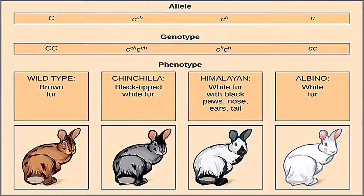The wild-type rabbit, which has brown fur, also called agouti — a color which is usually gray or dull brown — is the most dominant color. Followed by chinchilla, having black-tipped white fur. Next is himalayan, having white fur with black paws, nose, ears, and tail. And albino, having only white fur.